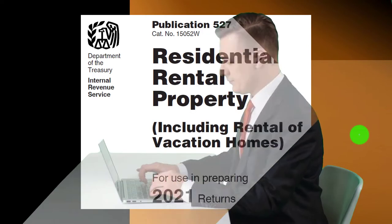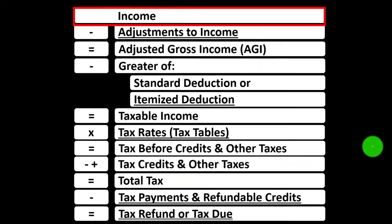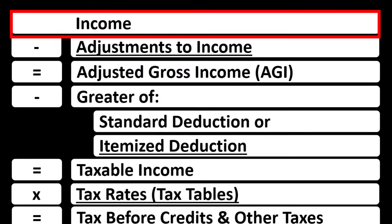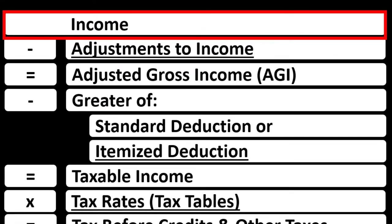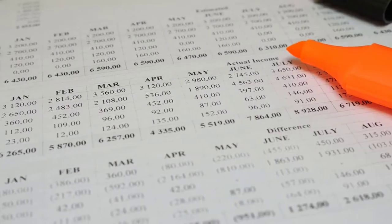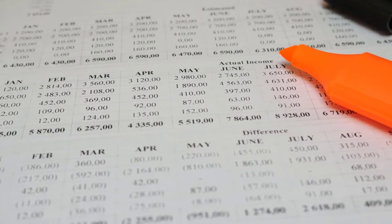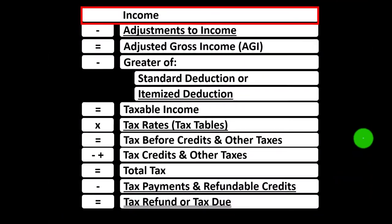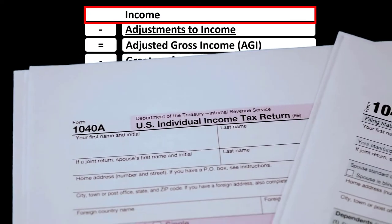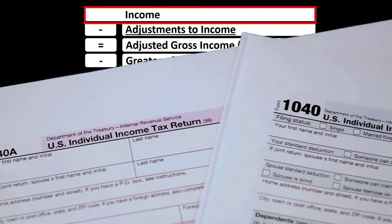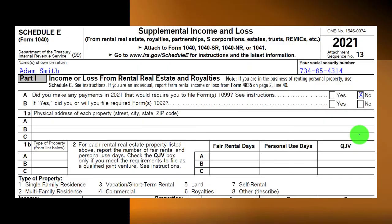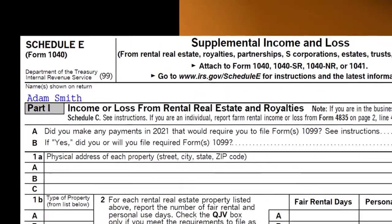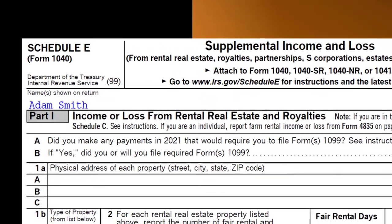Looking at the Income Tax Formula, Line 1 Income, we would have a sub-schedule — basically an income statement with income and expenses. Expenses are essentially deductions, and the net then rolls into Line 1 Income, as well as eventually page 1 of Form 1040. This is the Schedule E, basically the income statement schedule — the supplemental income and loss.